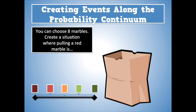So now let's talk about creating events along the probability continuum. Imagine you had this problem. You can choose eight marbles. Create a situation where pulling a red marble is impossible. So, a situation where you can't pull a red marble. Well, easy. All you have to do is put in marbles that aren't red. So if you had eight blue marbles, throw in those blue marbles, and it will be impossible to pull out a red one. They could be green. They could be yellow. Anything but red. So that's a situation where pulling a red marble is impossible.